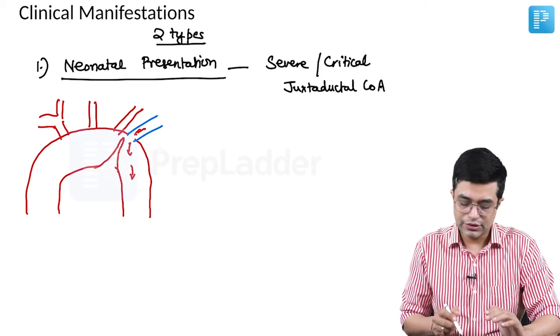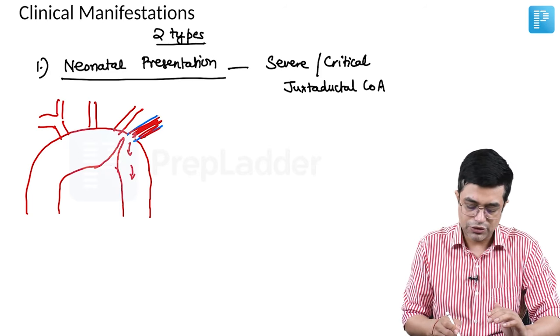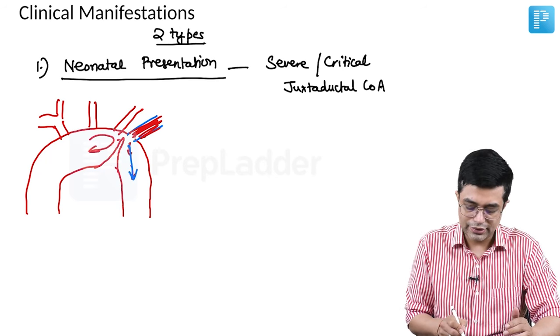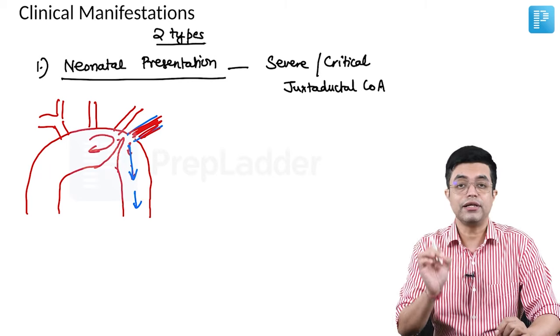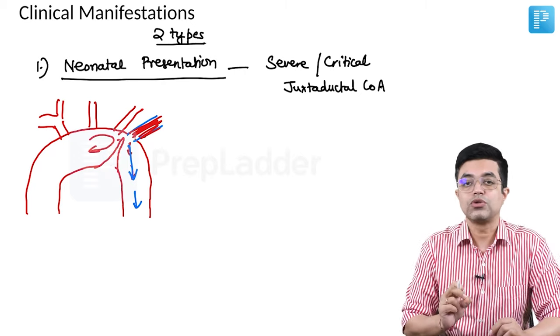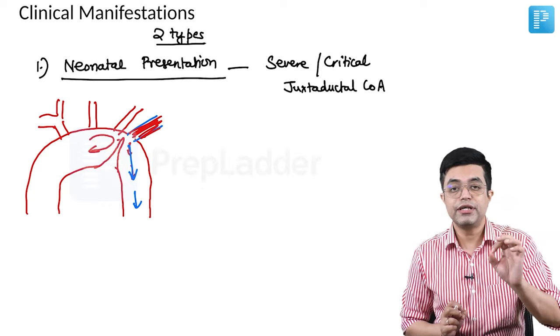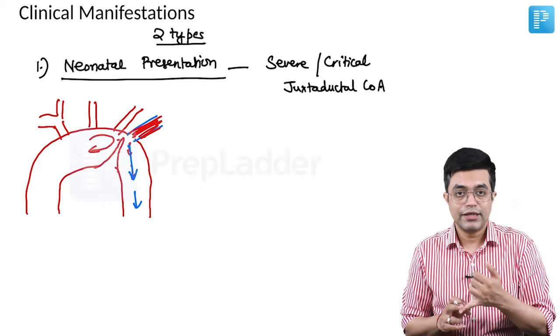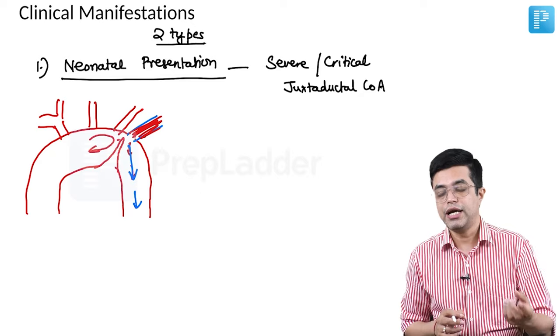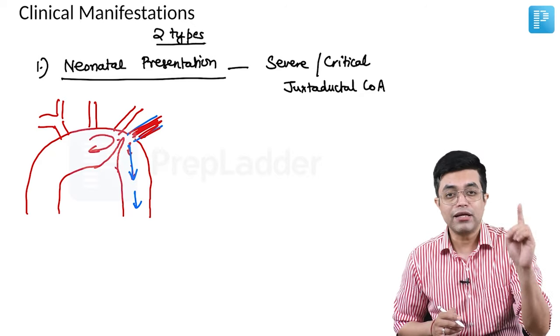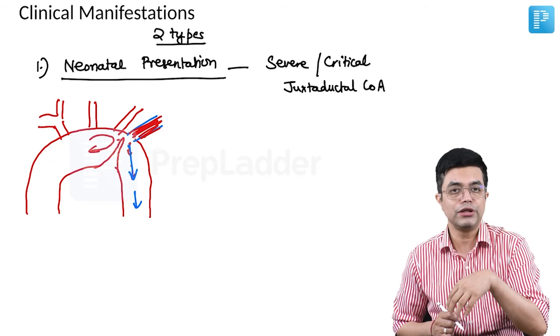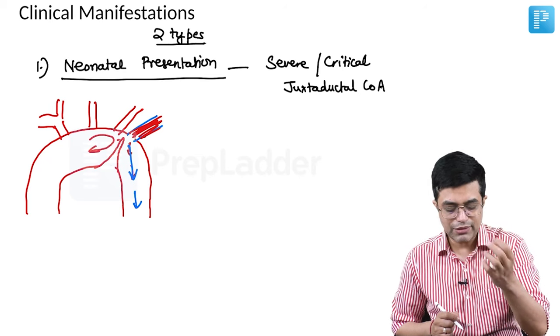In utero, the blood supply to descending aorta is being maintained through this ductus arteriosus. As soon as after birth, this ductus arteriosus closes. Because of the narrowing, the amount of blood required to go into the descending aorta tends to get significantly reduced. As soon as ductus arteriosus closes, these patients will present with severe shock. There will be absent pulses, especially in the lower limbs. There will be oliguria and severe metabolic acidosis. These children will develop pallor with shock, not cyanosis. Unless you do something, the patient will die.